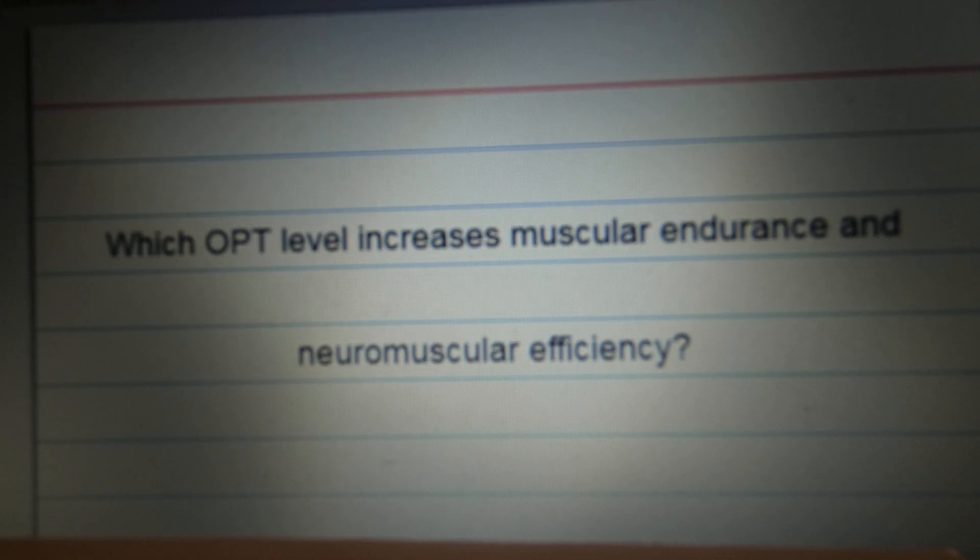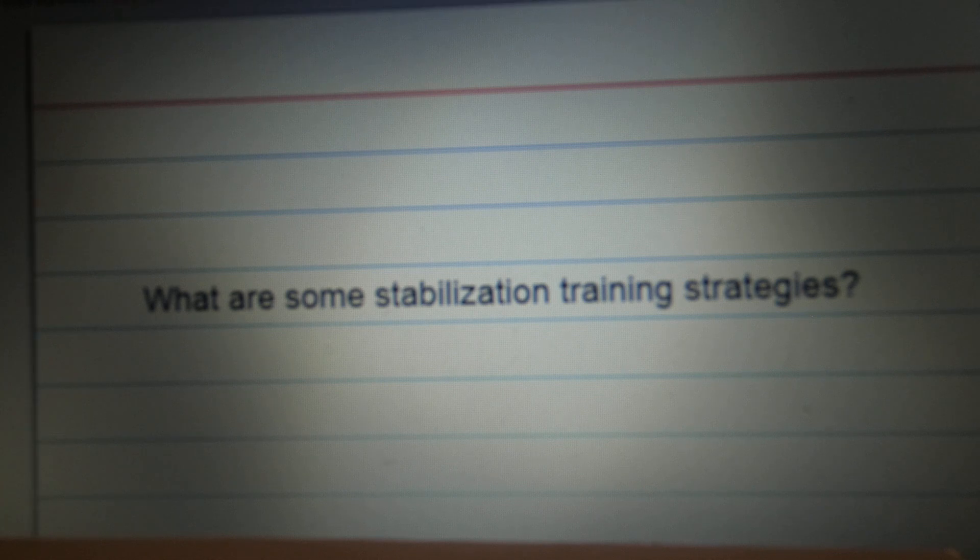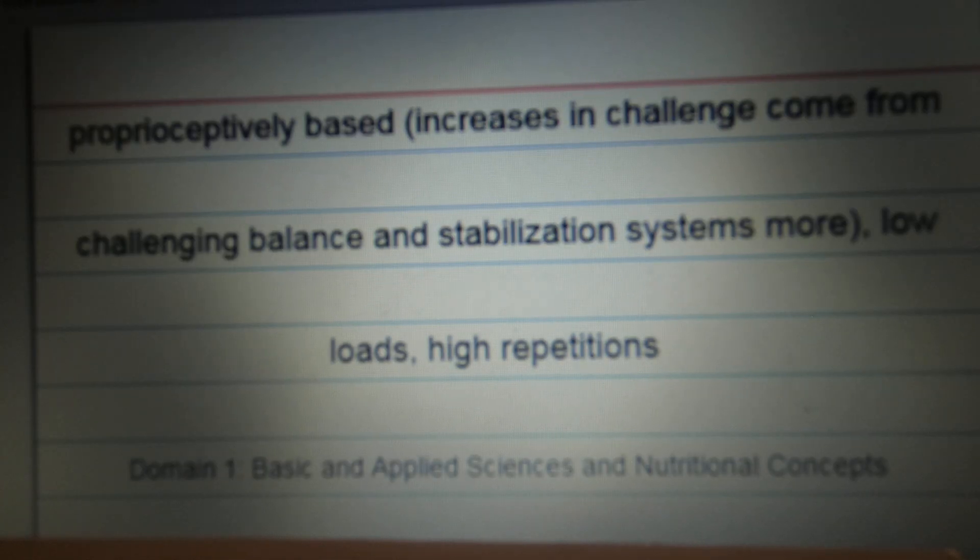Which OPT level increases muscular endurance and neuromuscular efficiency? Stabilization. What are some stabilization training strategies? Proprioceptively based increases in challenge come from challenging balance and stabilization systems more. Low loads, high repetitions.